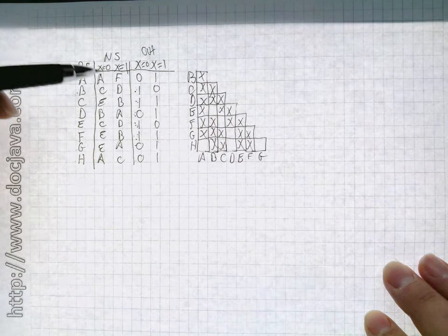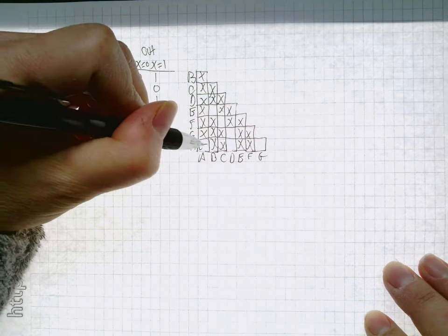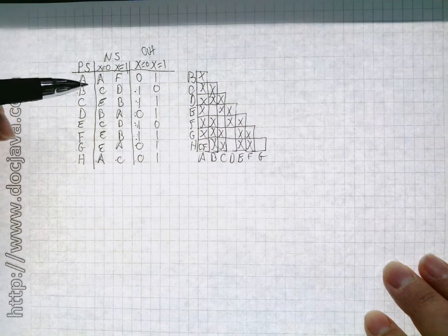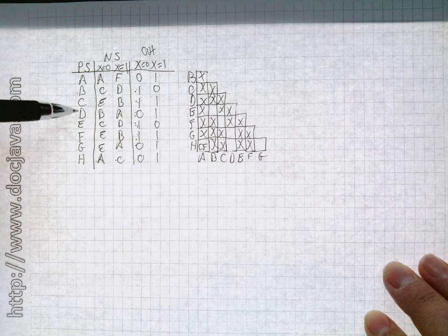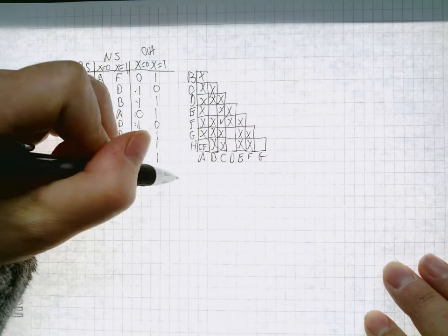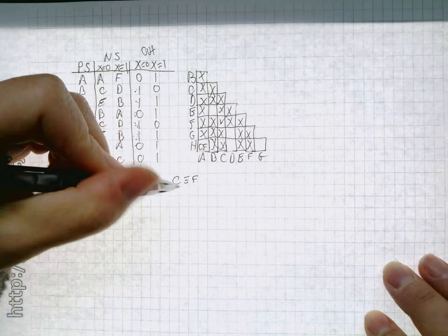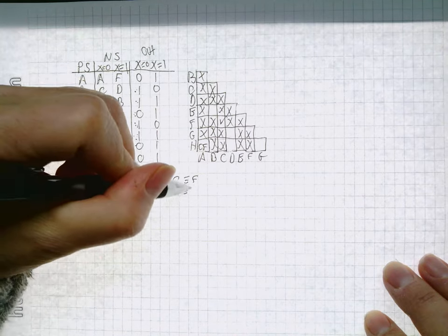A will be equal to H if A equals A, well it does do that, and if C equals F, and we don't know about C and F. So let's look up CF. C will be equal to F if E equals E, well it does do that, and if B equals B. Ah, so C does equal F. C equals F or is equivalent, A is equivalent to H.